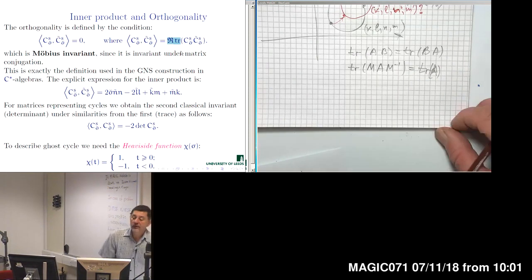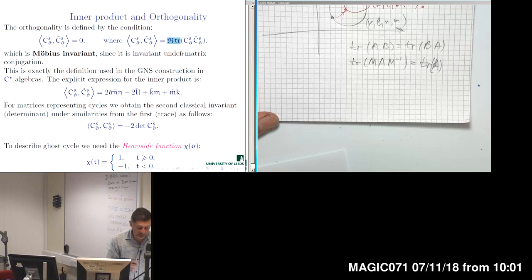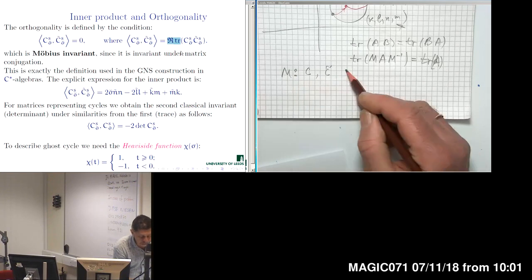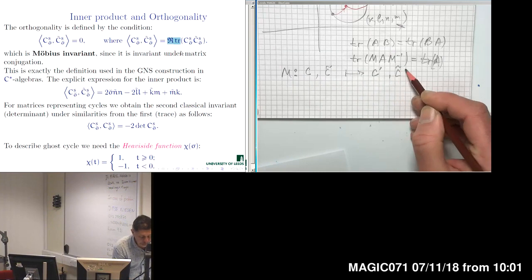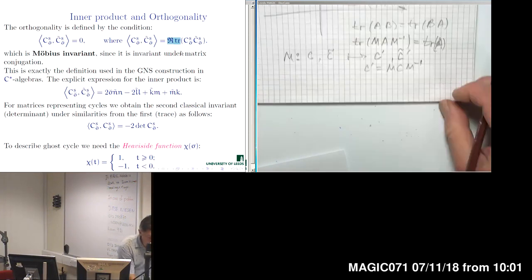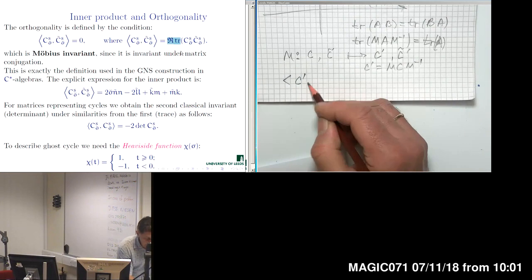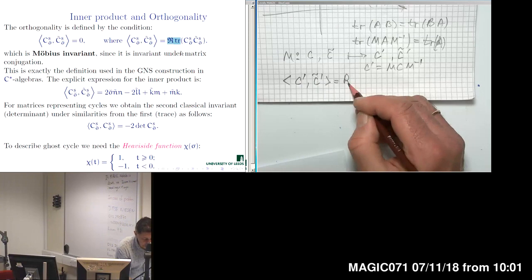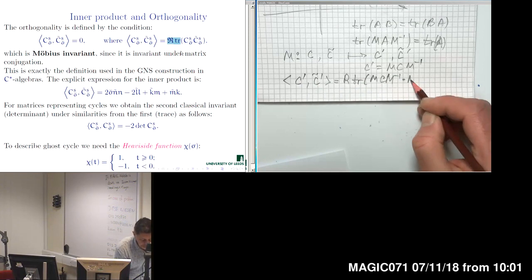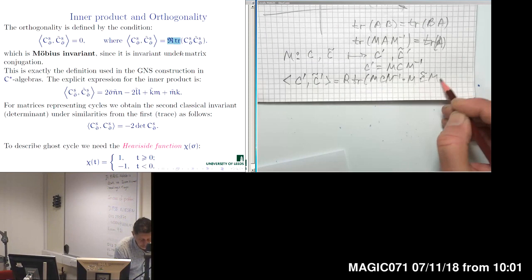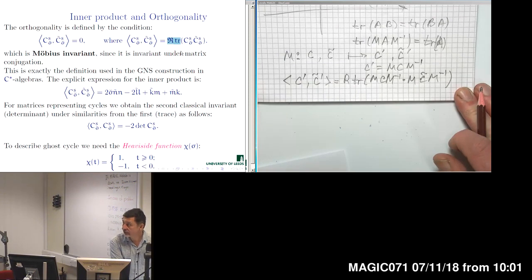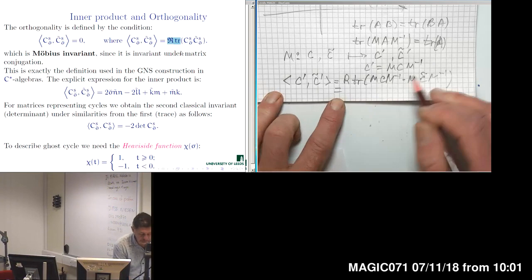Indeed, if we have two cycles C and C-tilde, and a Möbius transformation M which sends them to new cycles C-prime and C-tilde-prime, we have the relation that C-prime equals M C M⁻¹. For the inner product, the product of C-prime and C-tilde-prime is the real part of the trace of M C M⁻¹ times M C-tilde M⁻¹, according to the action of the Möbius transformation on cycles in matrix form. Here we have a nice cancellation in the middle.